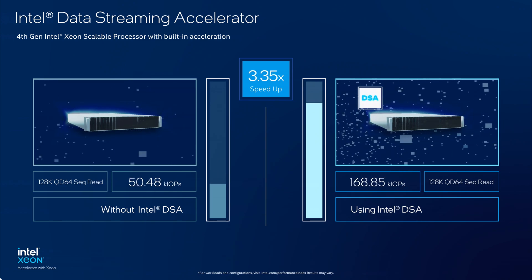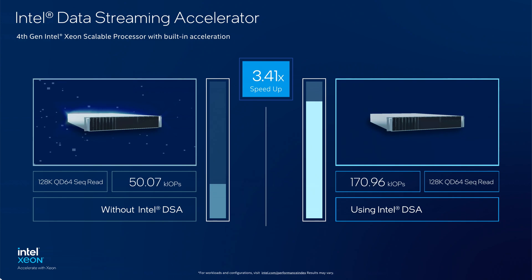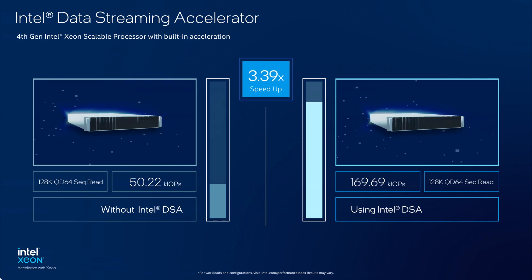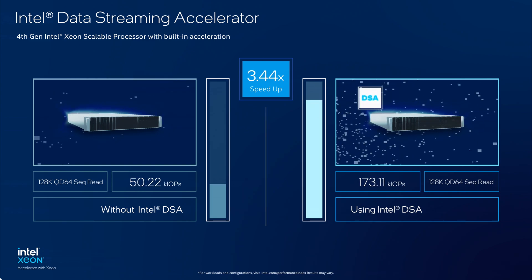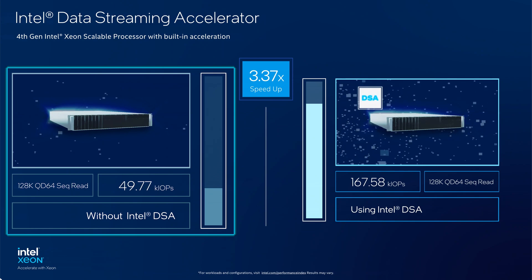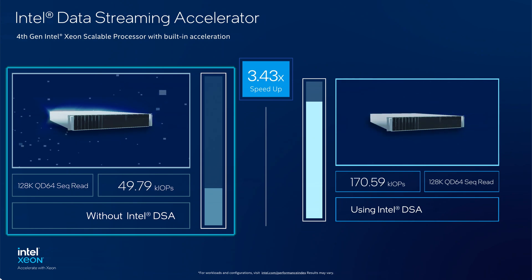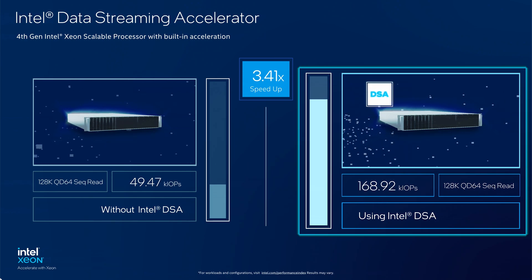To showcase the advantage of built-in acceleration and core efficiency, we have a storage application running on a single core of the 4th Gen Xeon Scalable Processor. On the left, you can see the CRC32 data digest being done without DSA. And on the right, it is using the built-in acceleration with Intel DSA.